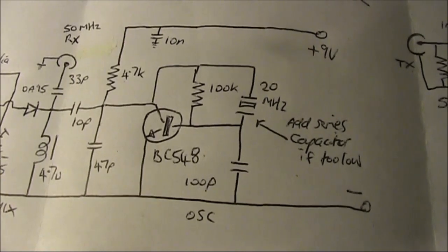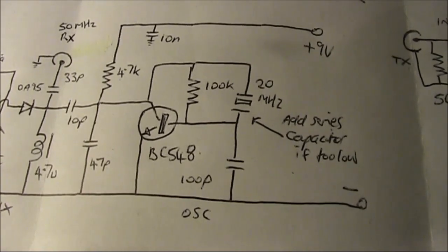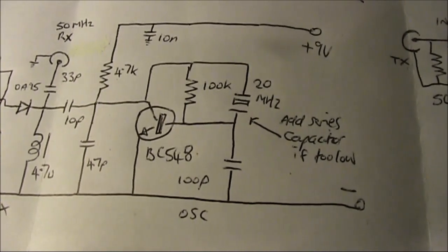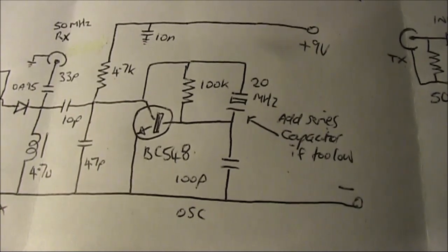If that's an issue, you can add a small capacitor, say 22 or 47 picofarads, in series with the 20MHz crystal. That will bring the crystal frequency up to nearer exactly 20MHz.